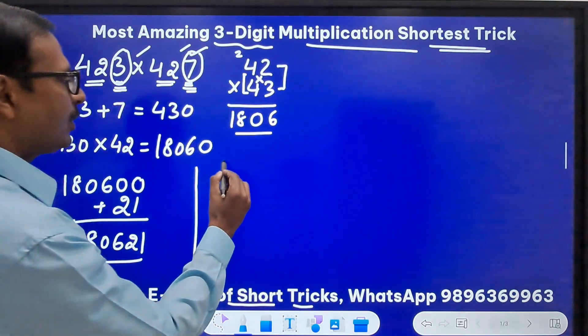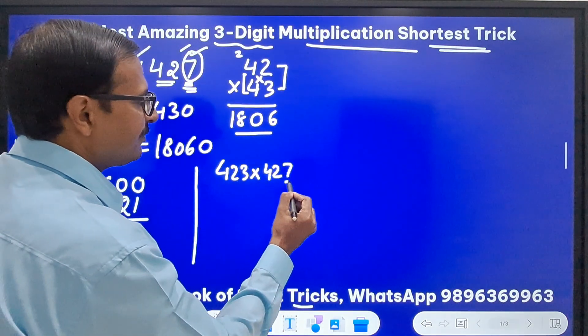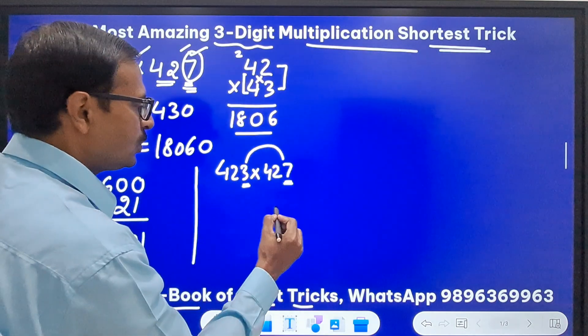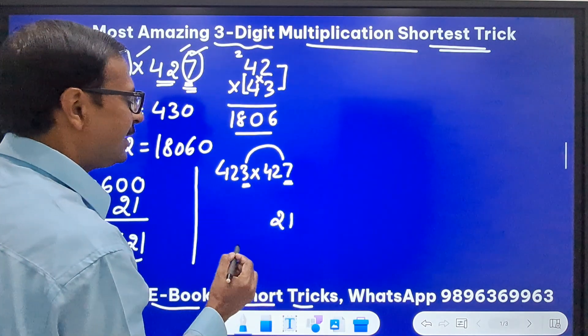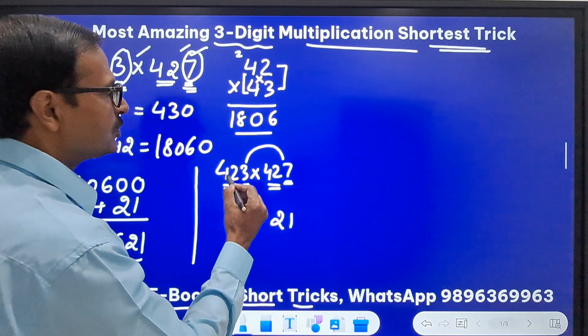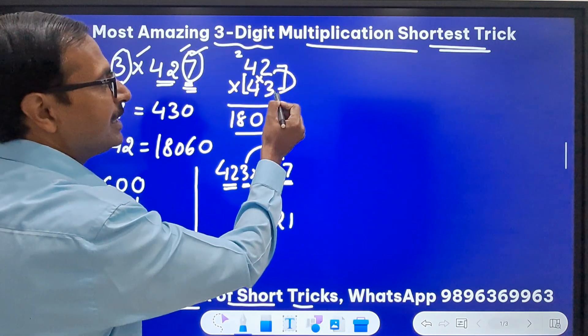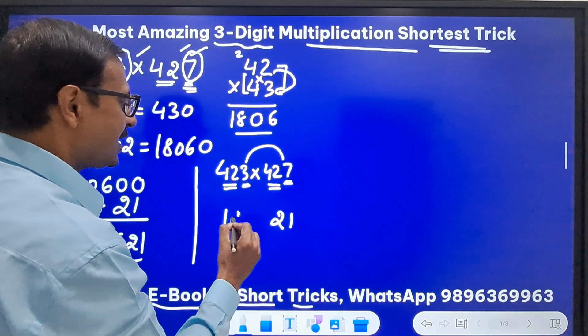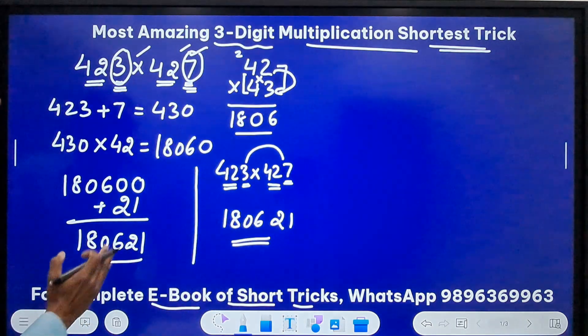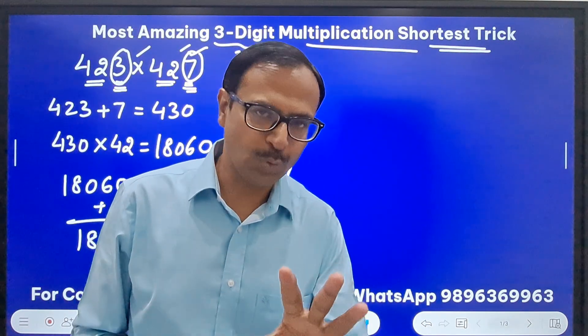I will take different examples, but I am telling you one more trick for this. See, 423 times 427. So if this and this add up to 10, just multiply these two, 21. And then the number 42 and 42, that is the same number right. So just do 42 times its next number 43. You get 1806. Just write 1806. You will get the answer which is same as this. But this is like more logical and applicable universally. So I will show you one more example.